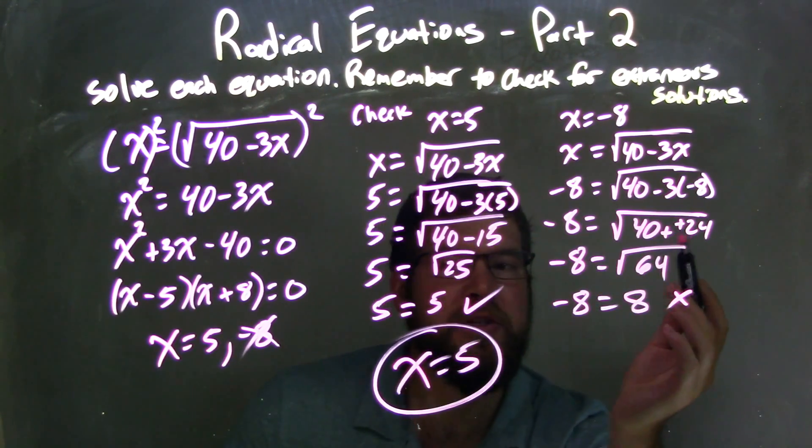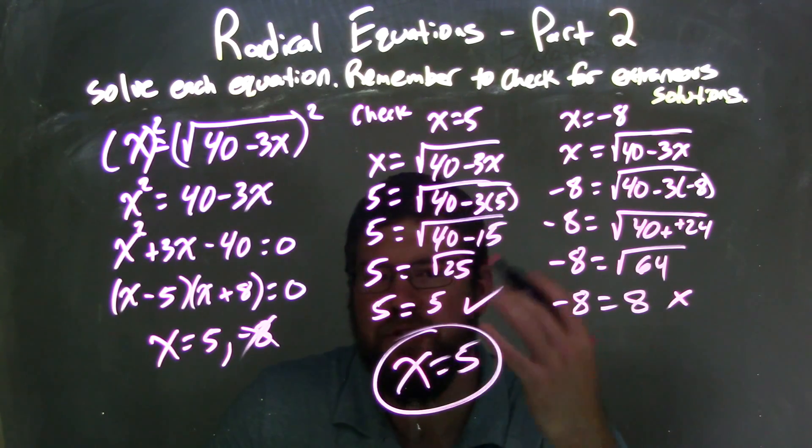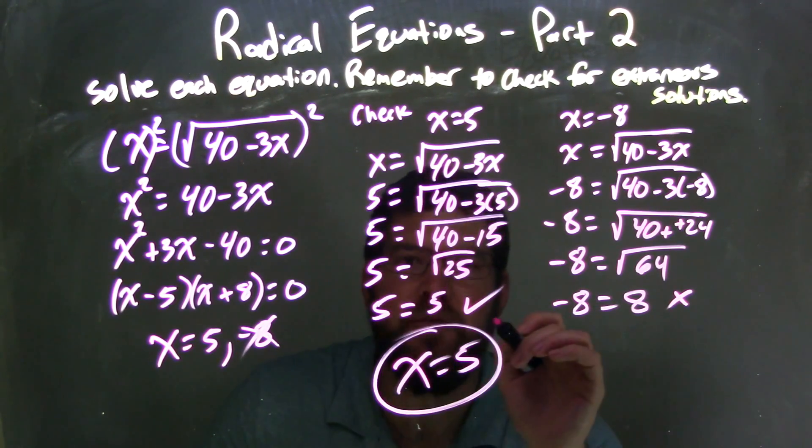Since negative 8 is an extraneous solution, 5 is my only real solution. My final answer is x equals 5.